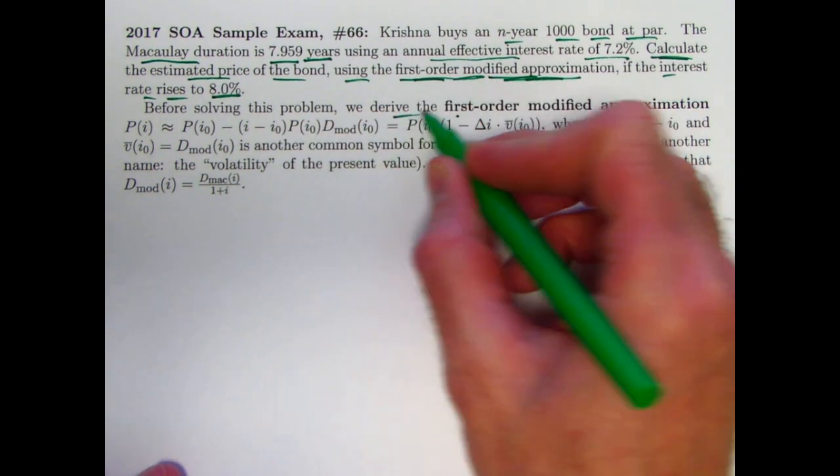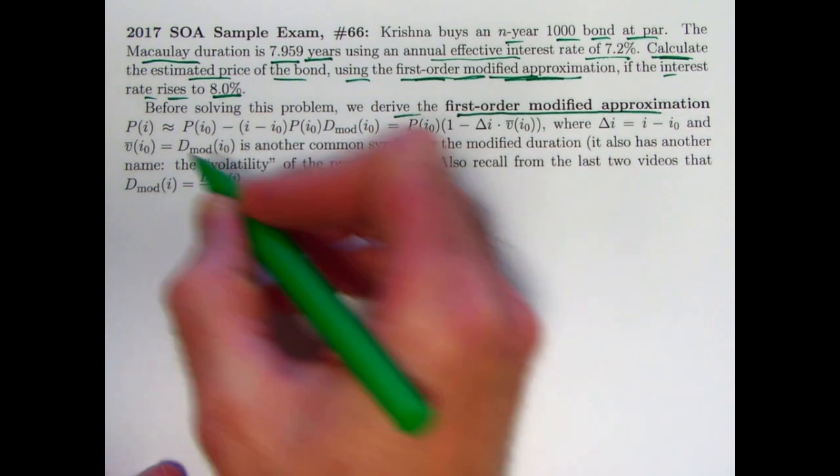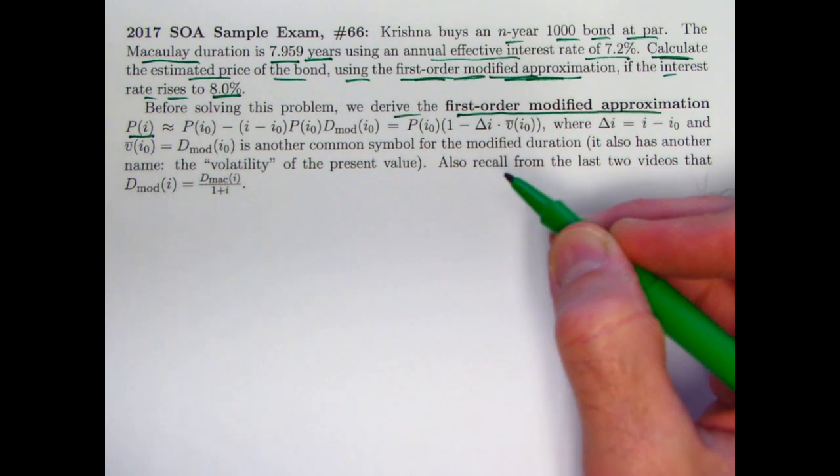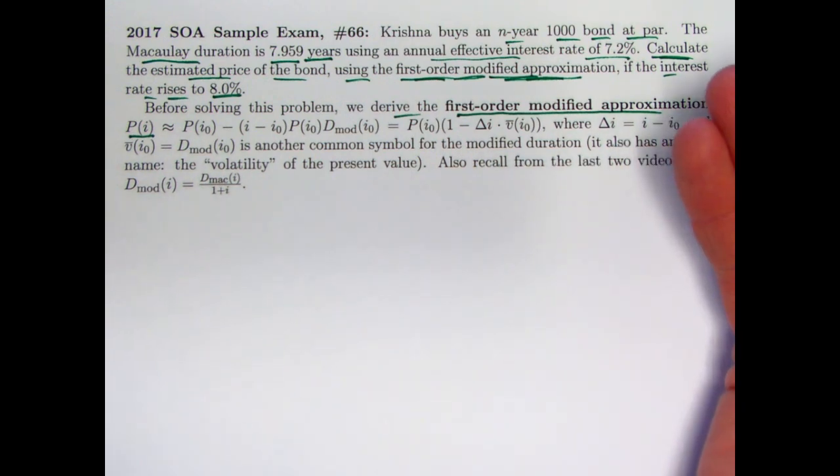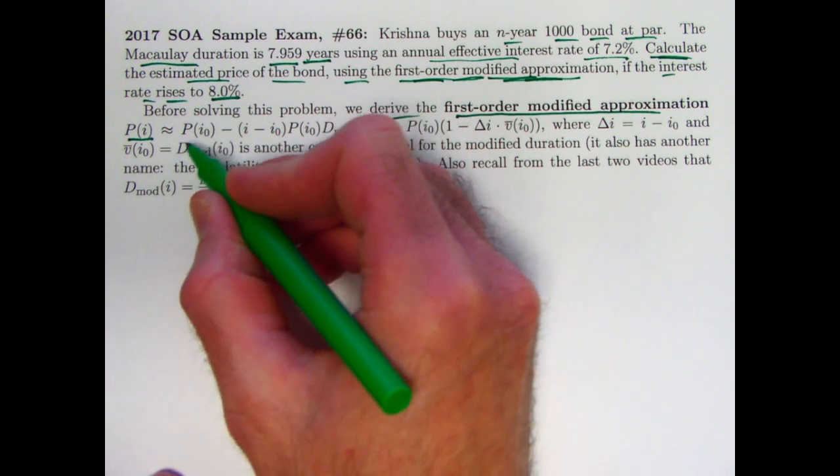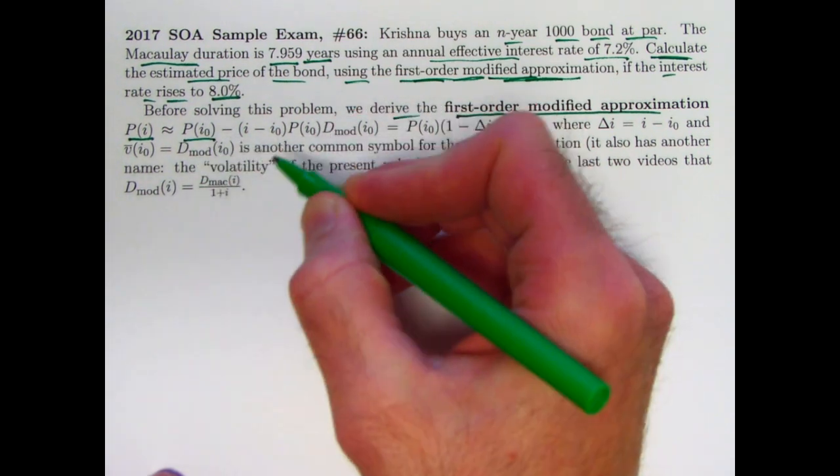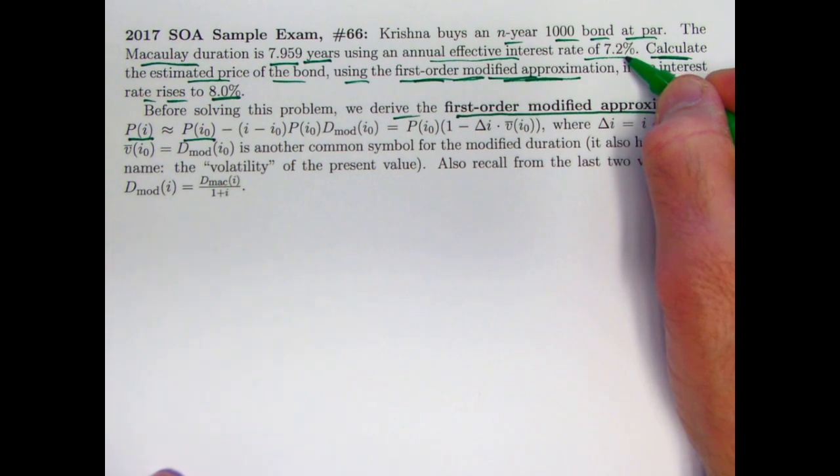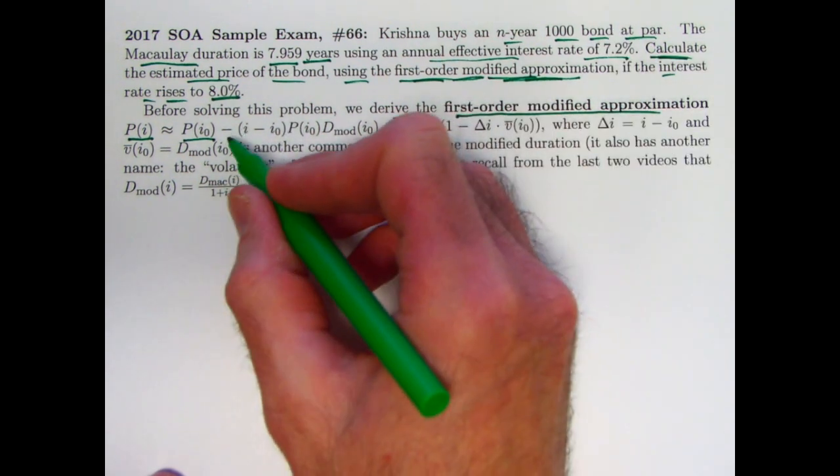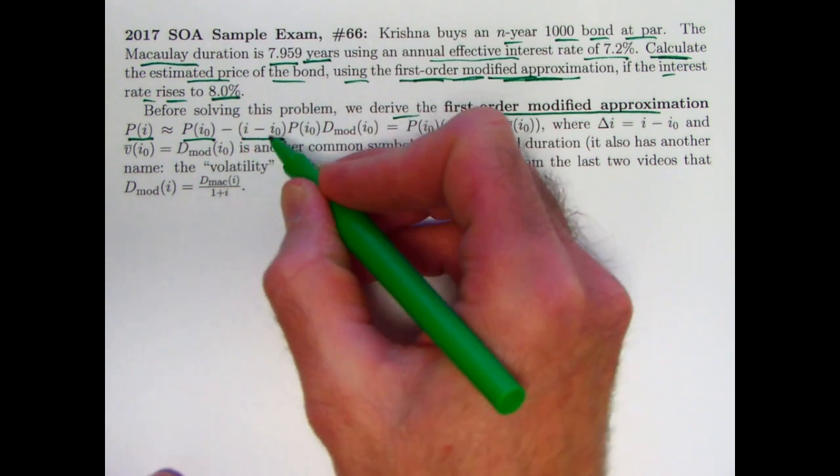So the interest rate's going up, so the price should be going down. We want to approximate it with this first-order modified approximation. Before solving that, we're going to derive the first-order modified approximation. Here's what it is. P(i), the price of the payment stream, in this case it would be the coupons from the bond as well as the redemption value. That's the present value. That is the original present value at the given interest rate, 7.2%, and that present value would be 1,000, minus, not plus, this is not a typo, minus, i minus i0, that would be the change in the interest rate.